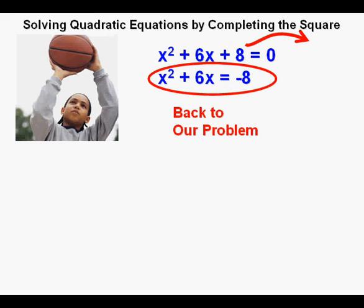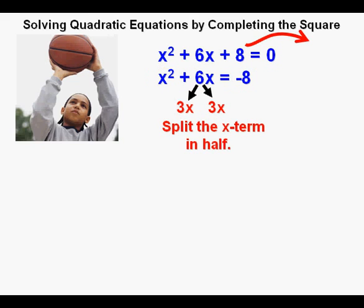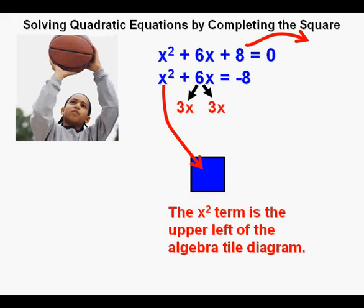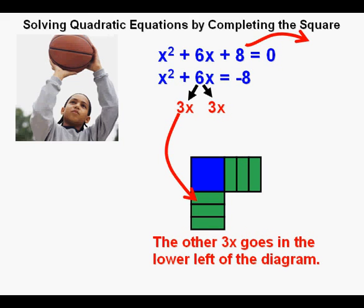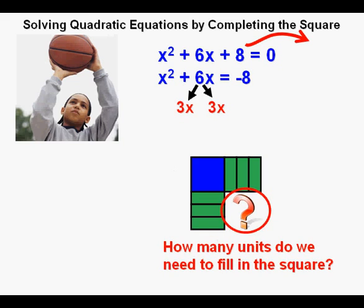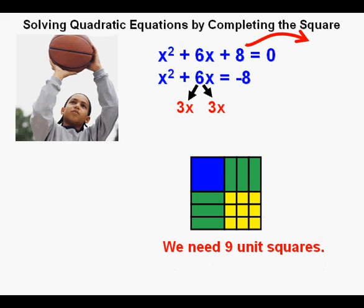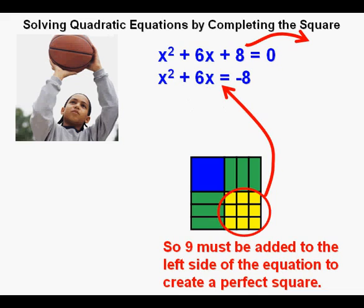Back to the problem at hand: x squared plus 6x equals negative 8. This x term, 6x, needs to be separated into two equal parts, 3x and 3x. Now we're ready to start making the diagram of the square. The x squared term goes here, then half of the 6x's, or 3x's, go here at the upper right, and the other half go here at the lower left. It's a 3x3, so we'll need 3 times 3, or 9, little squares to fill in this square — which is literally completing the square. This tells us we must add 9 to the left side of the equation to make it a perfect square.